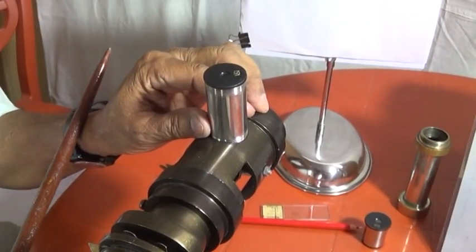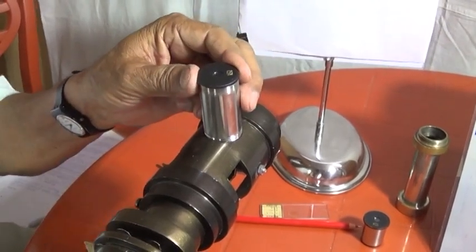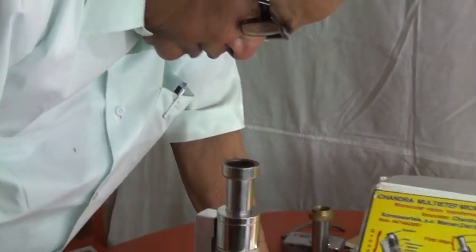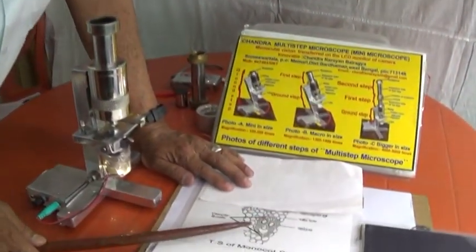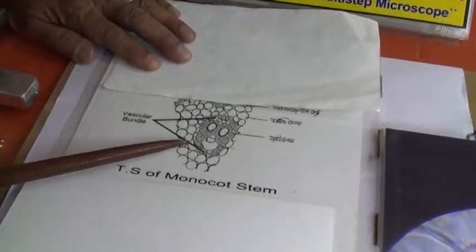If we view through the eyepiece of first step, we can get 1000 times magnification. We are observing the structure of the cell wall. We are observing the image of the only one vascular bundle instead of many vascular bundles.